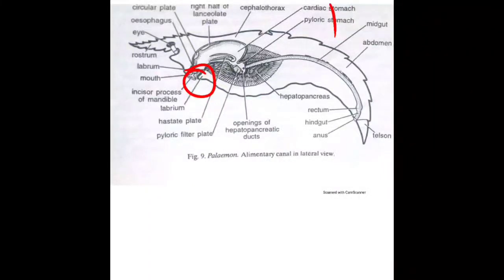The esophagus is a very short, wide vertical tube with a thick muscular wall produced in four longitudinal folds.